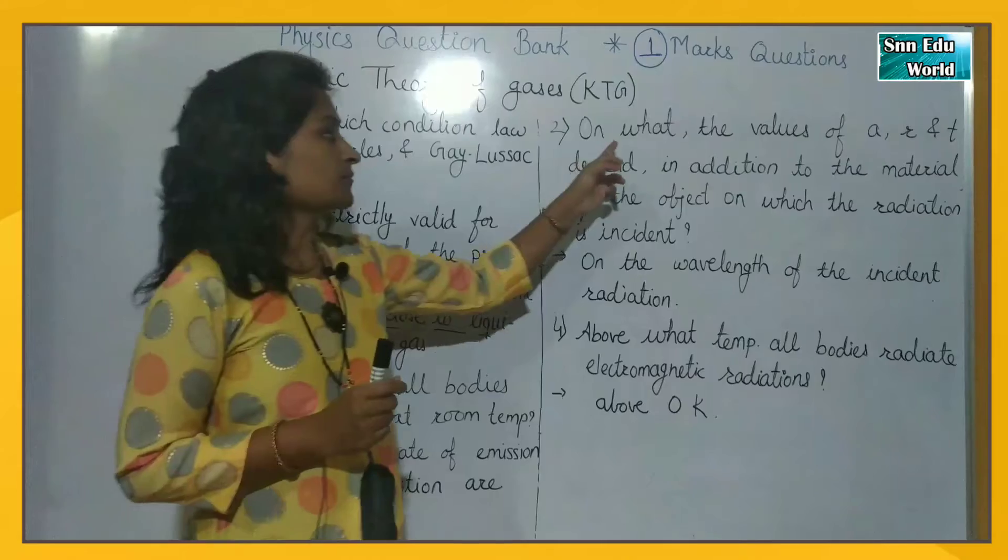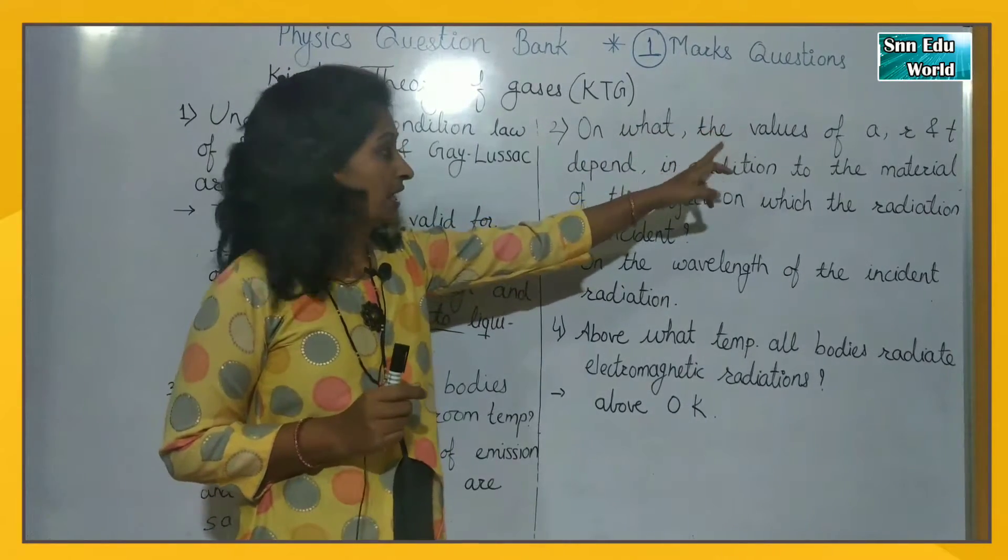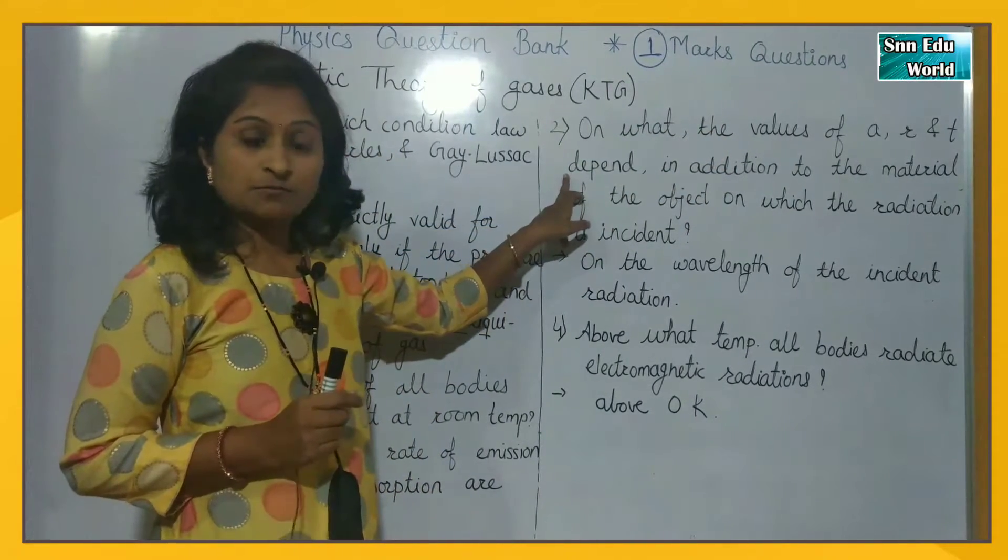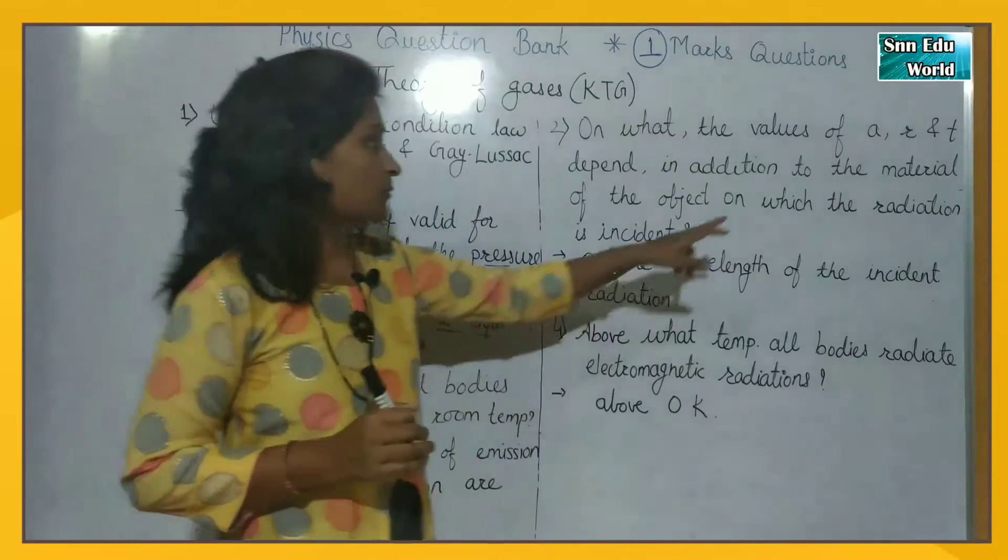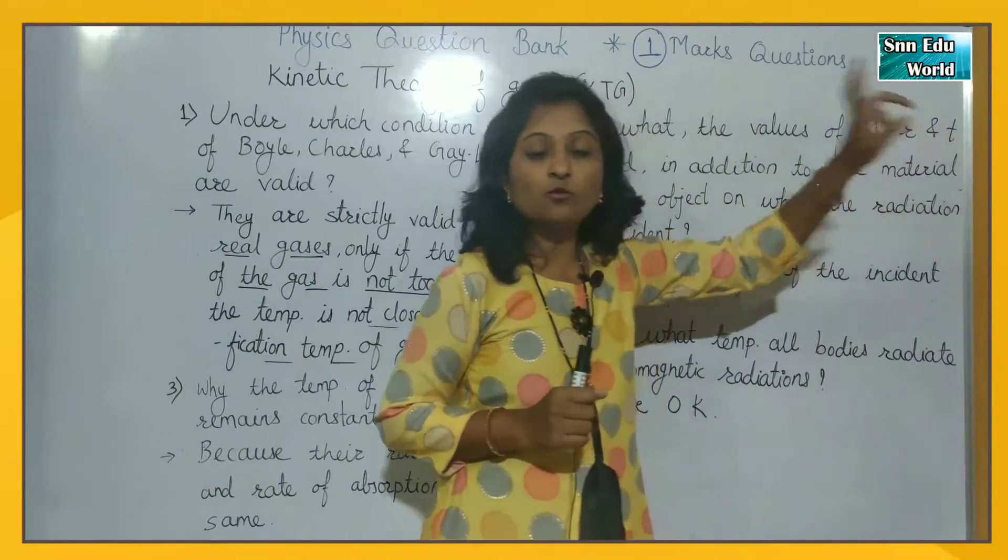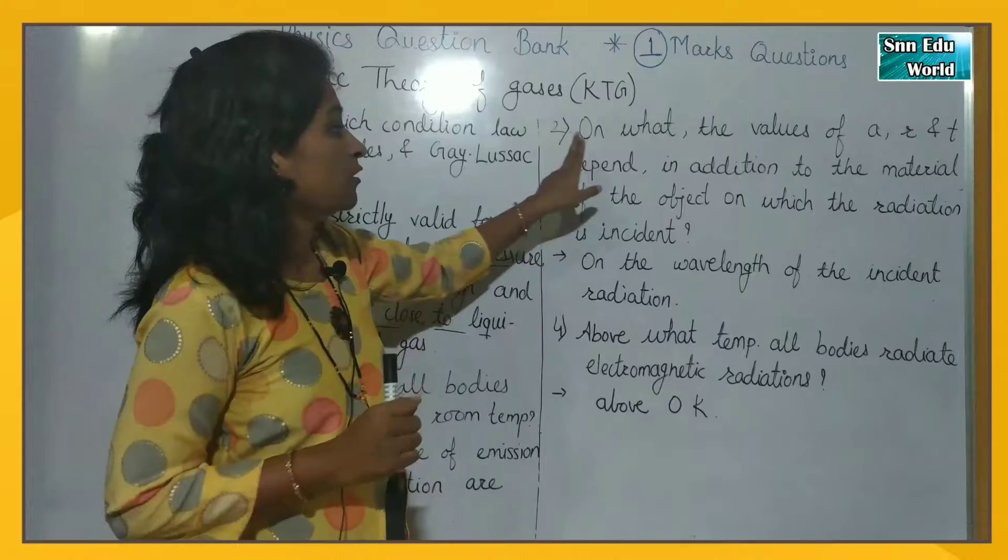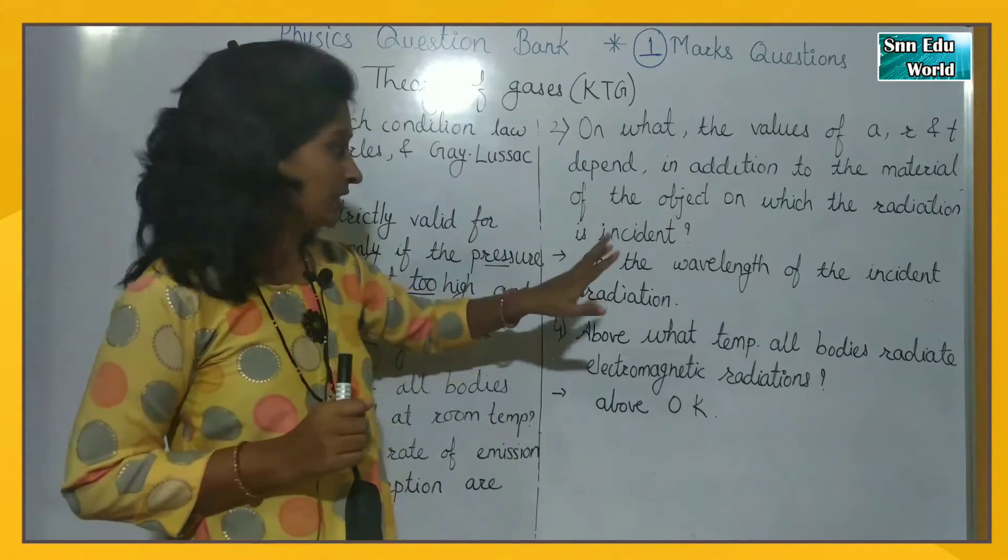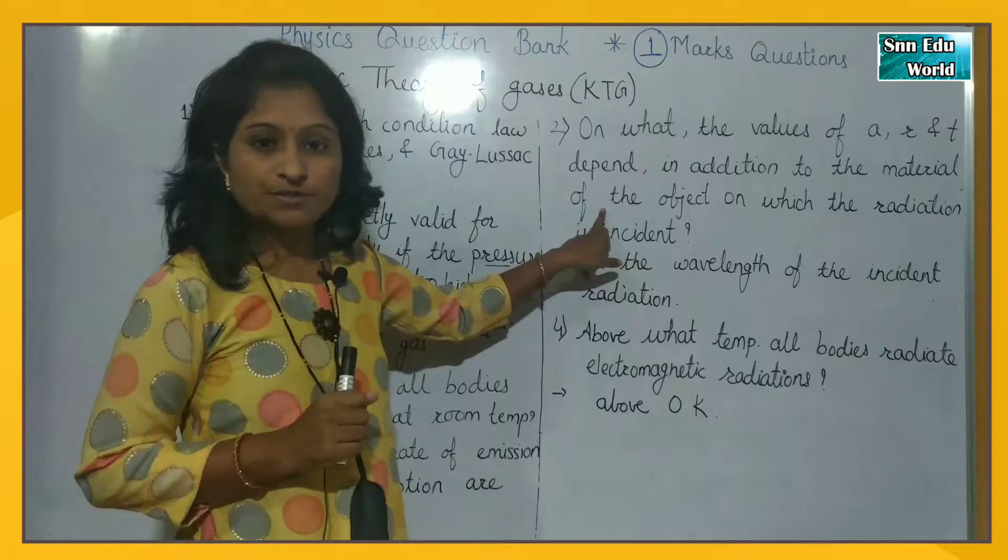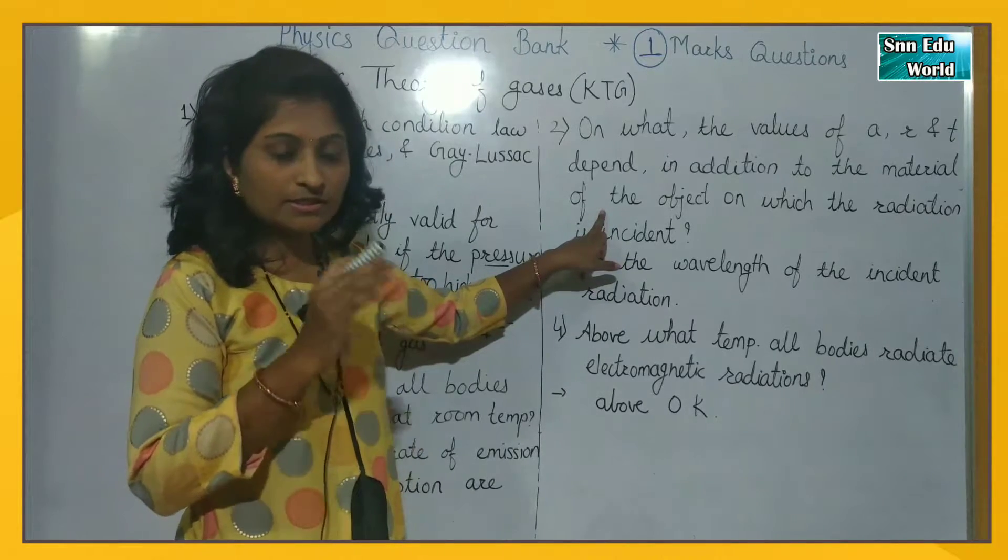Second question, on what the values of A, R and T depend. Means coefficient of absorption, coefficient of reflection and coefficient of transmission. On what values these three are depending? In addition to material of the object, on the wavelength of the incident radiation.